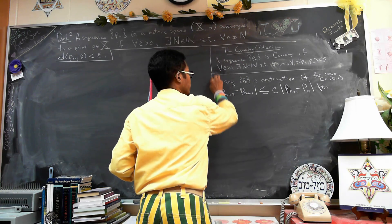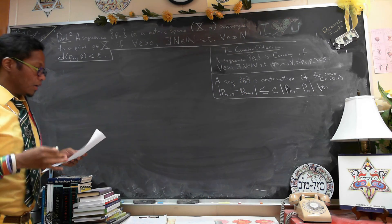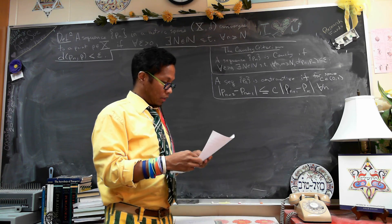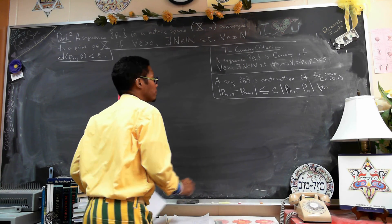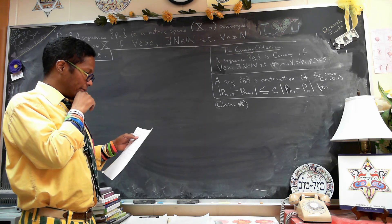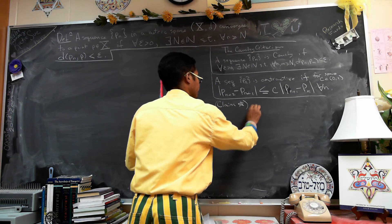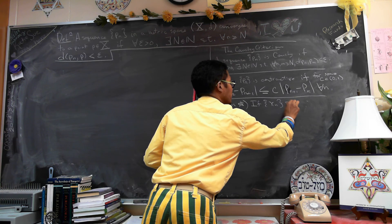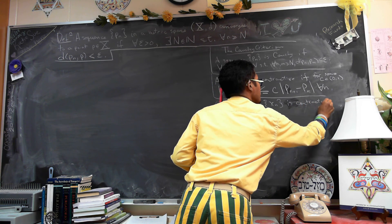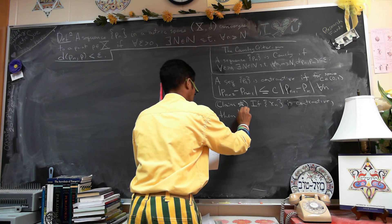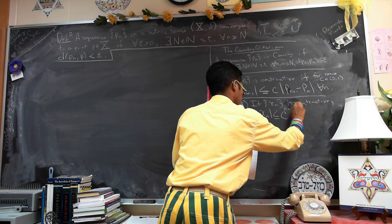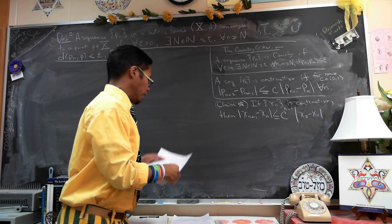This is what we call a contractive sequence, and I'm going to prove that every sequence that satisfies this contractive condition is actually a Cauchy sequence. To that end, we first need a little claim. Claim star: if a sequence x_n is contractive, then x_{n+1} minus x_n is less than or equal to c^{n-1} times x_2 minus x_1, and this holds for all n.